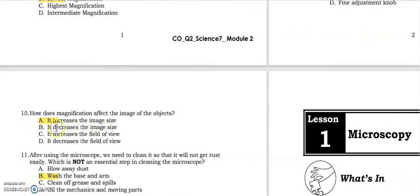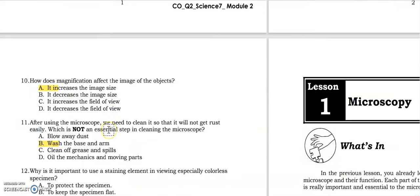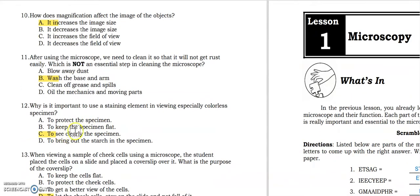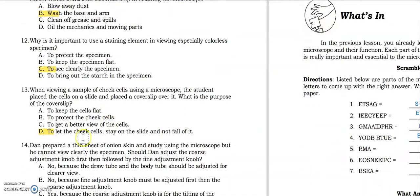And for number ten, letter A increases image size. Eleven is B, wash the base and arm. Twelve, C, to see clearly the specimen. Thirteen, letter D, to let the cheek cells stay on the slide and not fall off it.